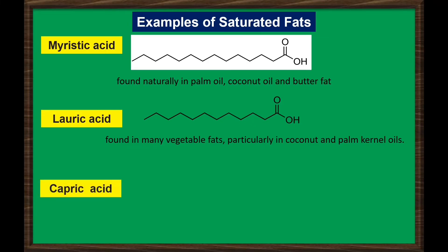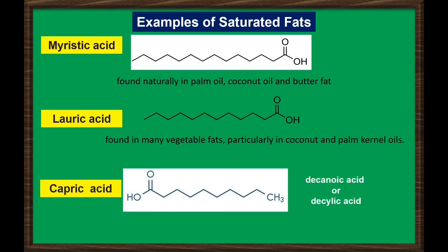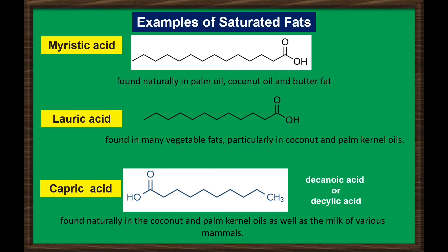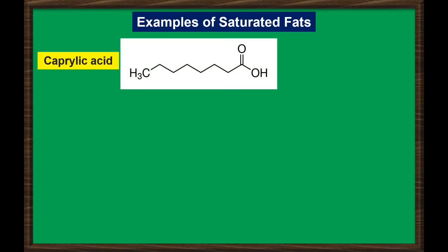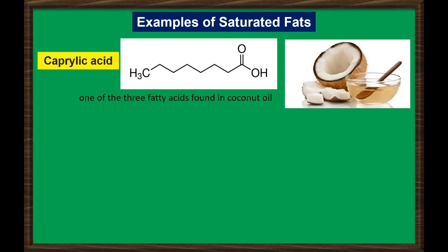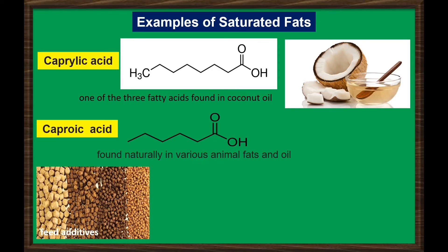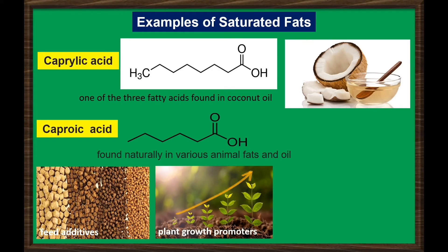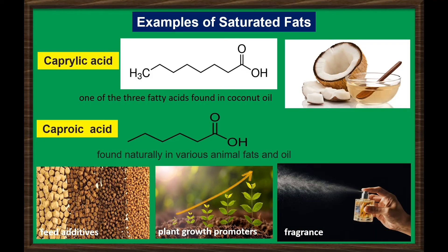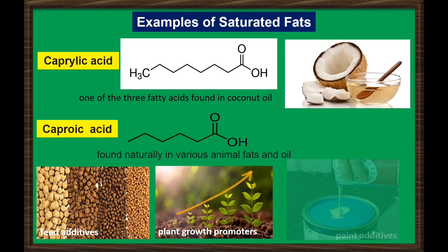Capric acid, also known as decanoic acid, is 10 carbon atoms long and is usually found naturally in coconut and palm kernel oils, as well as the milk of various mammals. Caprylic acid is 8 carbon atoms long and is one of the three fatty acids found in coconut oil. Caproic acid is 6 carbon atoms long, found naturally in various animal fats and oils. It can be used as feed additives, antimicrobials, and plant growth promoters, and as precursors to lubricants, fragrances, paint additives, and pharmaceuticals.